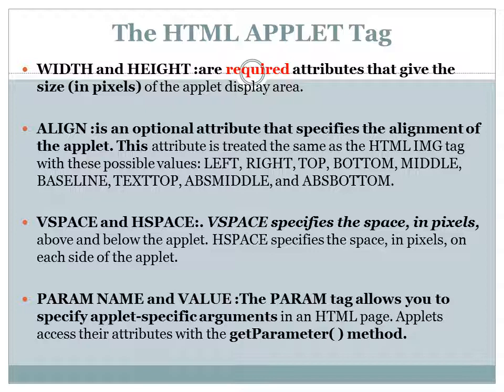The align attribute is optional and specifies the alignment of the applet — it can be set to left, right, top, bottom, middle, etc. The vspace and hspace attributes are also optional. Vspace specifies the vertical space above and below the applet, and hspace specifies the horizontal space on each side of the applet. Both values are specified in pixels.